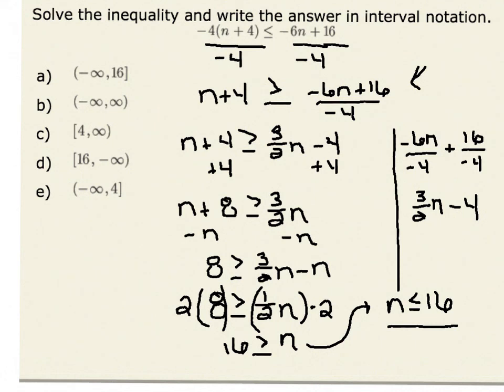Now all I have to do is translate this into interval notation. I know that n is less than or equal to 16, so my interval notation would go from negative infinity all the way up to and including 16.